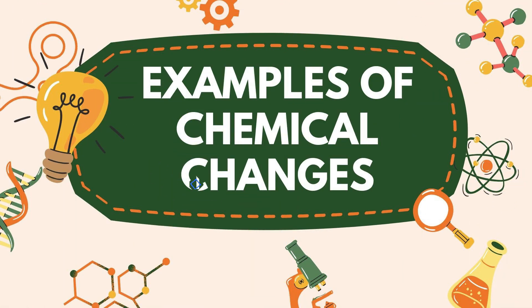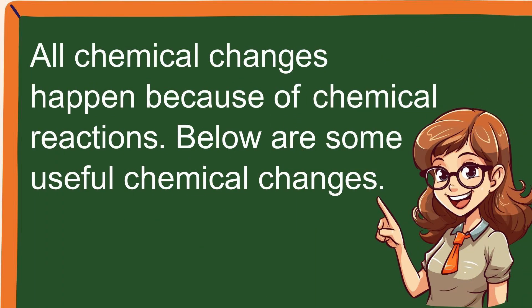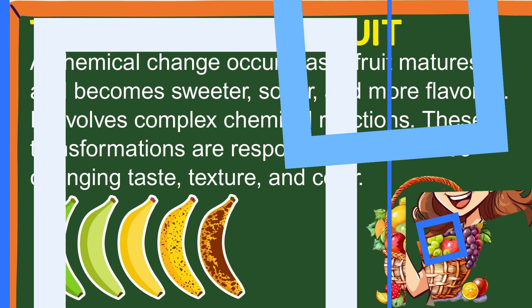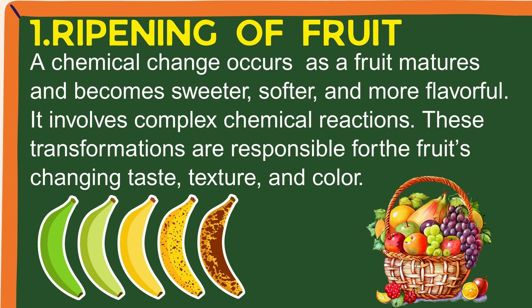Examples of chemical changes: All chemical changes happen because of chemical reactions. Here are some useful chemical changes. 1. Ripening of fruit — a chemical change occurs as a fruit matures and becomes sweeter, softer, and more flavorful. It involves complex chemical reactions responsible for the fruit's changing taste, texture, and color.